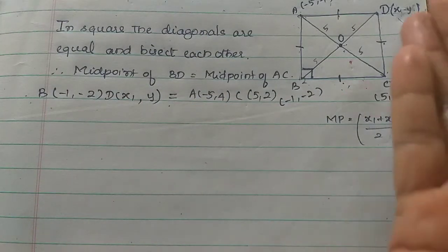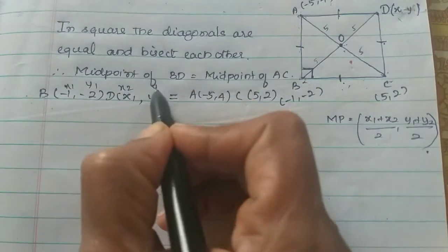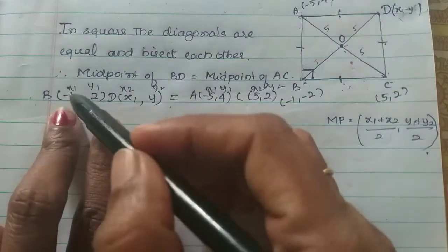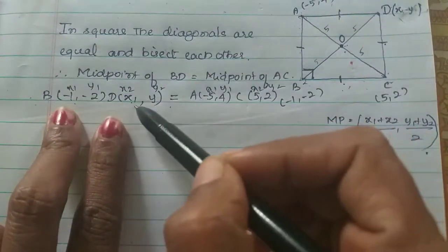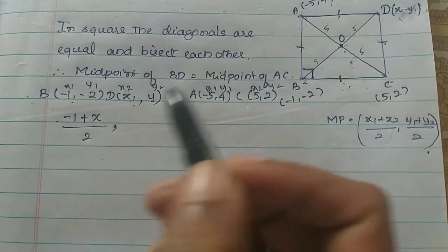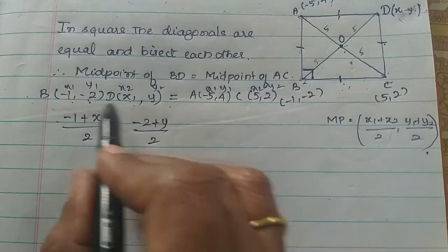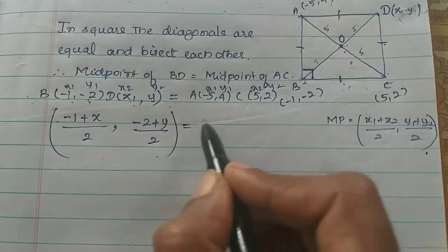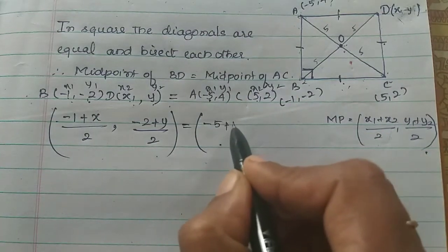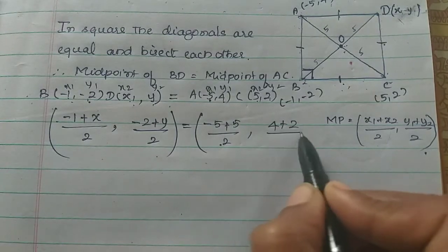So, B is (-1, -2) and D is (x, y). The midpoint of BD is ((-1 + x)/2, (-2 + y)/2). The midpoint of AC with A(-5, 4) and C(5, 2) is ((-5 + 5)/2, (4 + 2)/2) = (0/2, 6/2) = (0, 3).